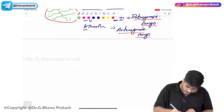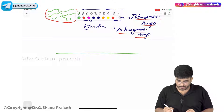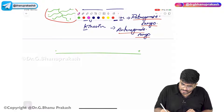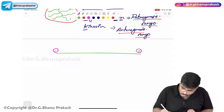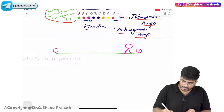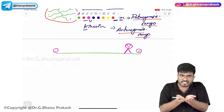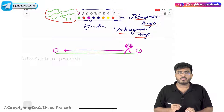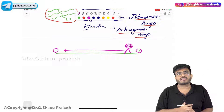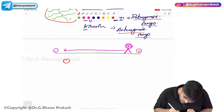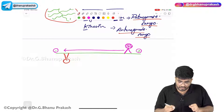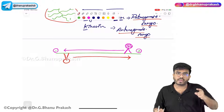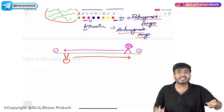Imagine a microtubule with a positive and negative terminal. A vesicle carrying substances moves toward the negative side — that is retrograde cargo. The molecular motor actually walks along the microtubule using GTP. If it moves toward the positive terminal, it is anterograde cargo. So there is retrograde and anterograde cargo on microtubules, facilitated by dynein and kinesin.